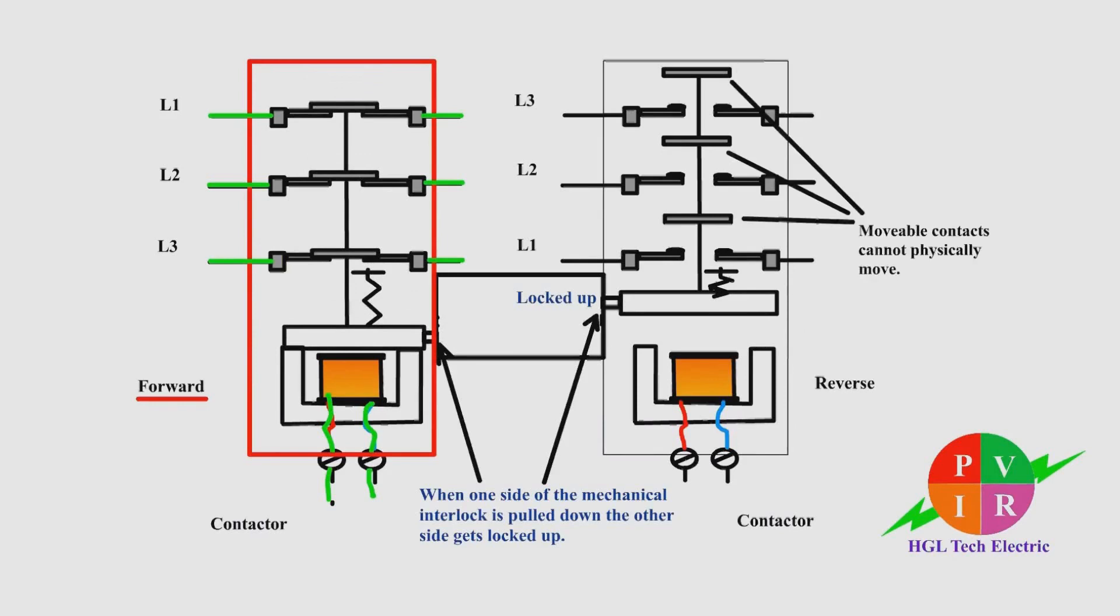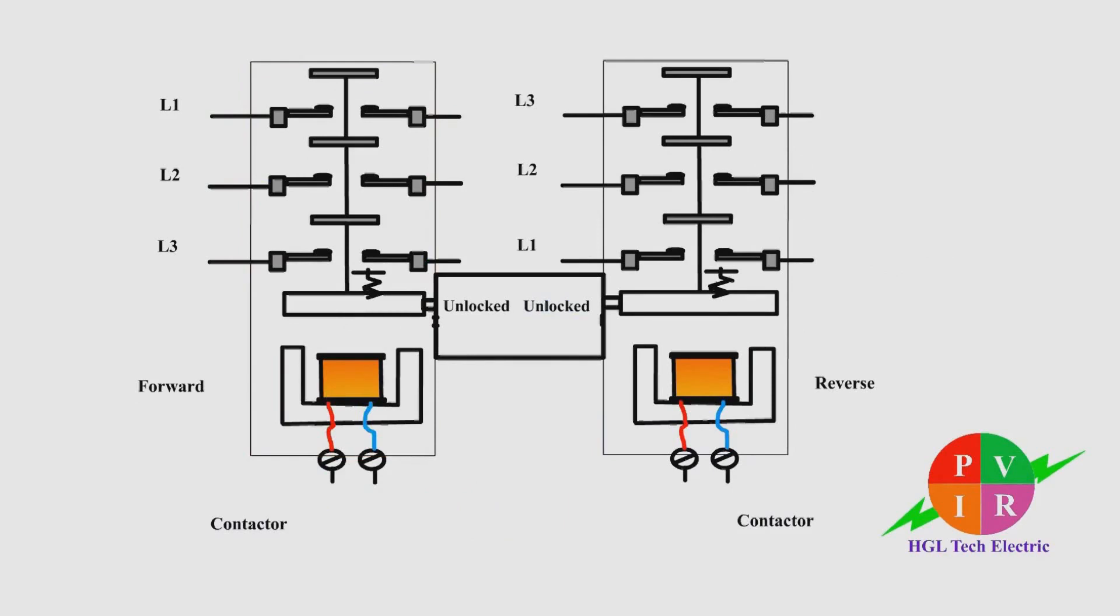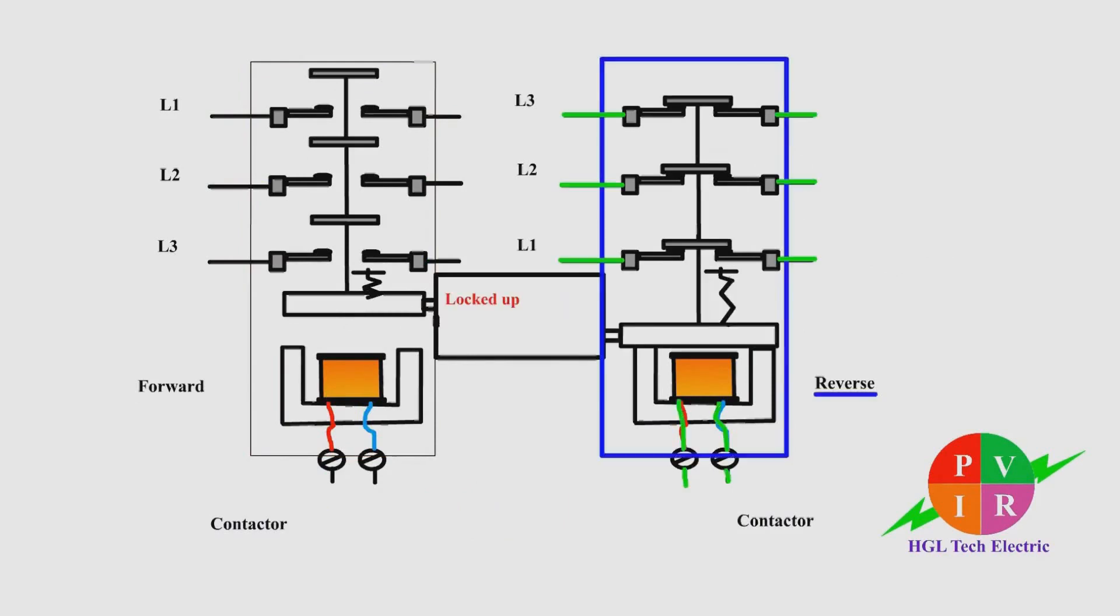When the movable contacts of the energized contactor pull down one side of the mechanical interlock, the other side gets locked up.